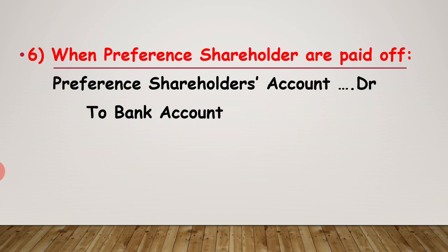When preference shareholders are paid off, then you write: preference shareholders account debit to bank account. This 6th entry must be remembered when you calculate the question of redeemable preference shares.